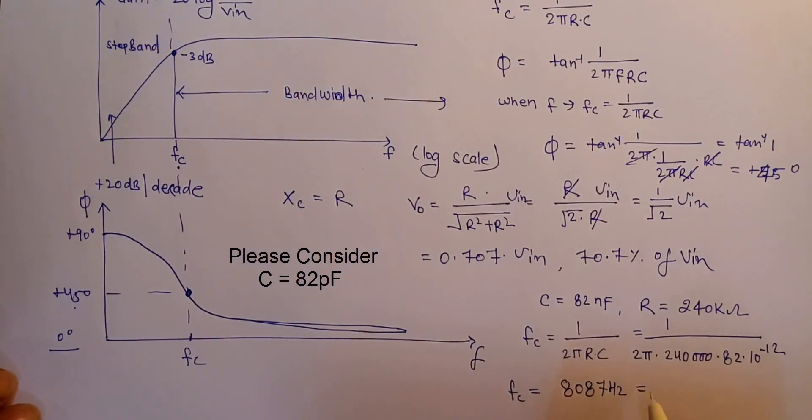8.7 kHz, that is almost equivalent to 8 kHz. So the cutoff frequency will be 8 kHz when R is 240 kilo-ohms and C is 82 nanofarads.